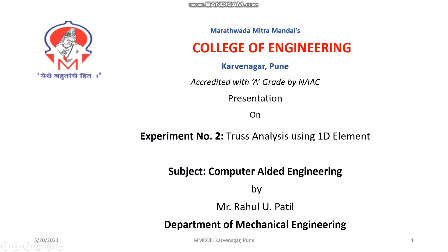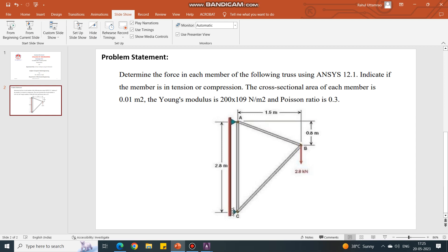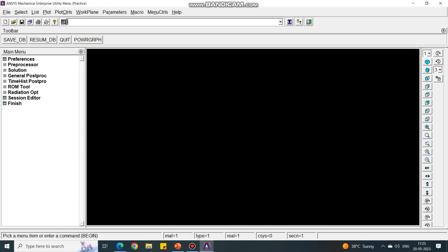Welcome to practicals under the Computer-Aided Engineering course. Today we will perform Experiment Number 2. The title is truss analysis using 1D bar. Here is the problem statement — just look at the data supplied to you, and we will directly go to the APDL screen. The problem belongs to the structural domain as we have to perform truss analysis.